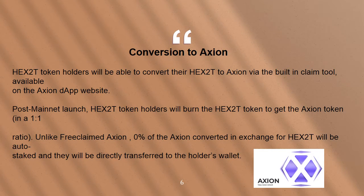HEX 2T token holders will be able to convert their HEX 2T to Axion via the built-in claim tool available on the Axion DApp website. Post mainnet launch, HEX 2T token holders will burn the HEX 2T token to get the Axion token in a 1-to-1 ratio. Unlike free claimed Axion, 0% of the Axion converted in exchange for HEX 2T will be auto-staked — they will be directly transferred to the holder's wallet.